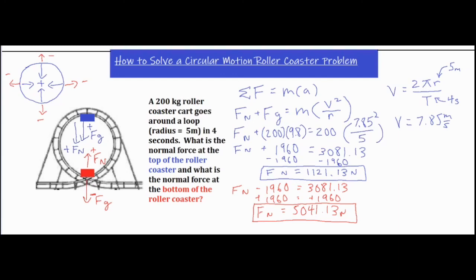We found the normal force for the bottom of the roller coaster: it came out to 5041.13 newtons — much larger than the top value. At the top, both Fg and Fn work together to provide the centripetal force. But at the bottom, Fn has to counteract Fg and also provide additional upward force to achieve a net centripetal direction. Therefore Fn has to be much larger to keep the person and the cart moving towards the center of the circle, which is why it comes out to a much larger value.